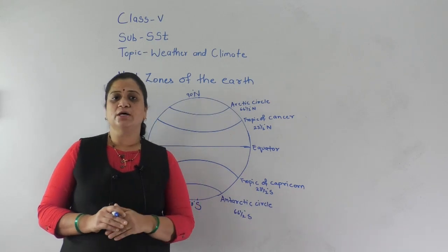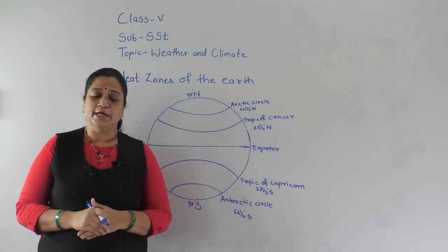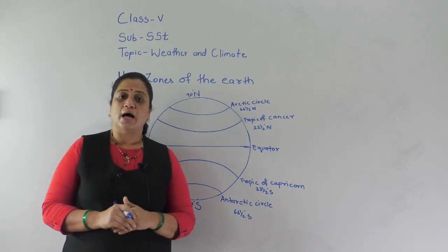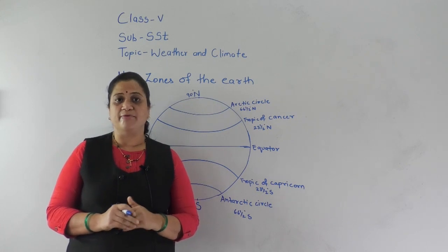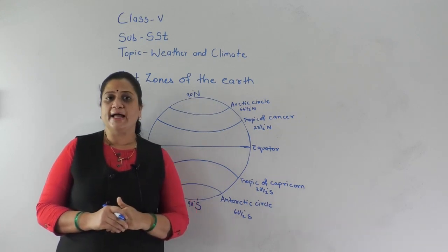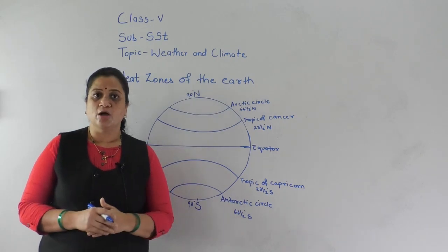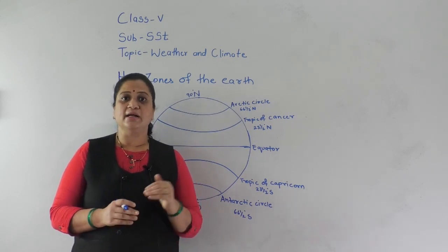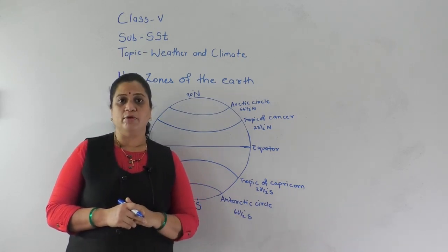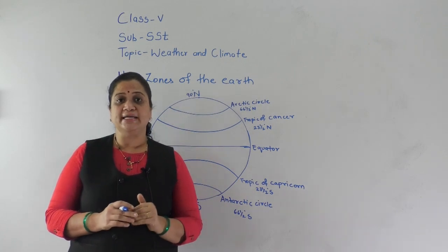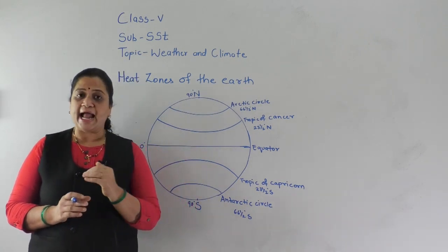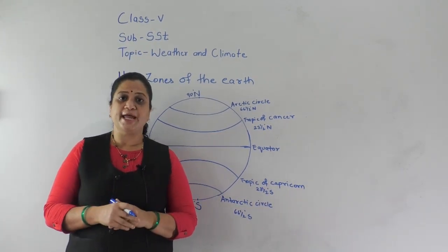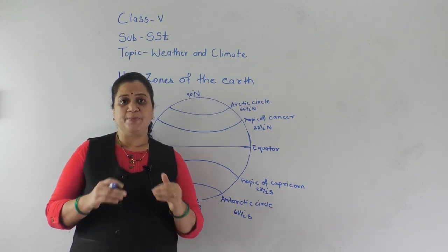The heat energy received on the Earth's surface is unevenly distributed — that is why some places are very hot and some places are very cold. The reason behind this difference in temperature and climatic conditions is the angle of the sun rays and the shape of the Earth, which is spherical.